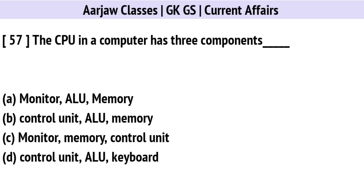The CPU in a computer has which three components? The correct option is B: Control Unit, ALU, and Memory.